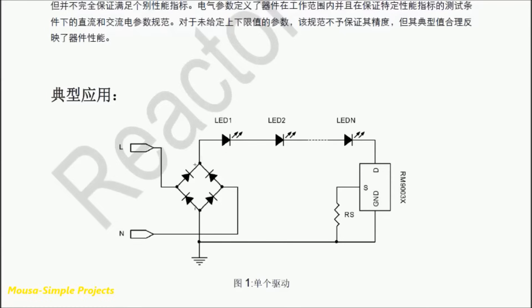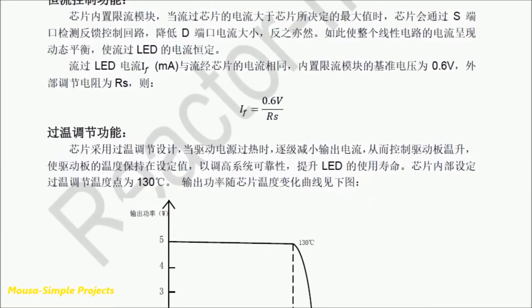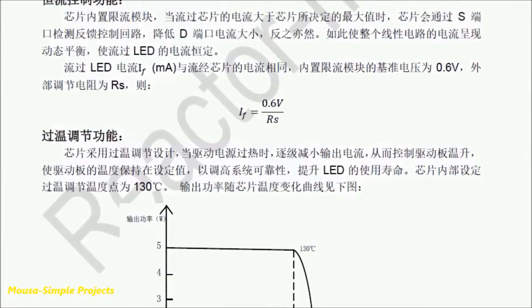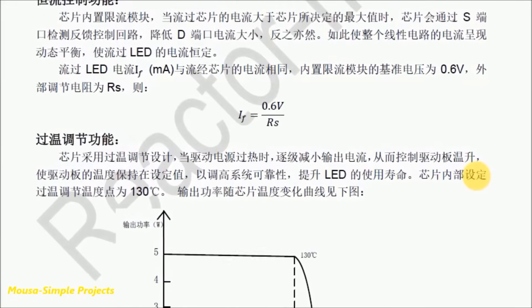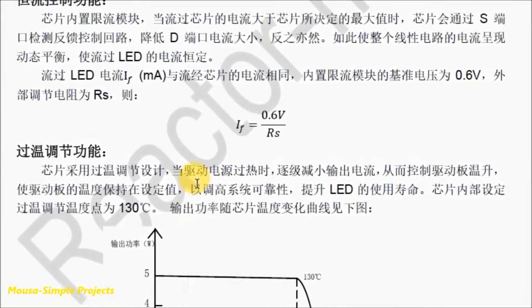If your supply voltage is DC, you don't need the bridge diode. By using this resistor you can set the current passing through your LEDs. You have to calculate the proper value for that resistor using this formula.